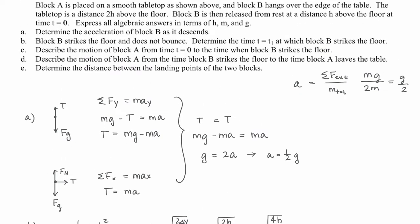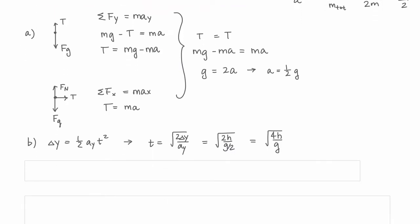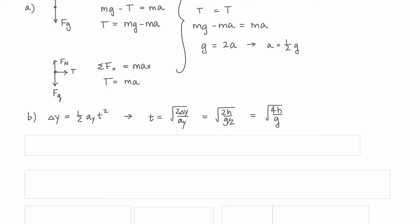Part C: Describe the motion of block A from t=0 to when block B strikes the floor. Because they're tethered by the same string, block A accelerates with the same acceleration that block B experiences.